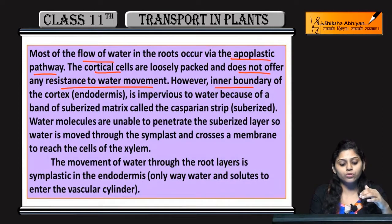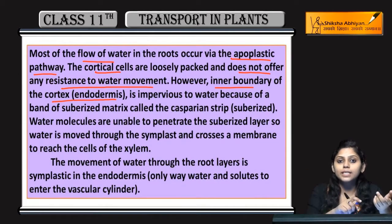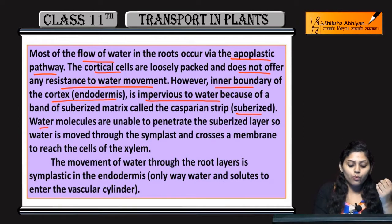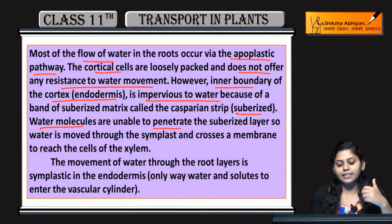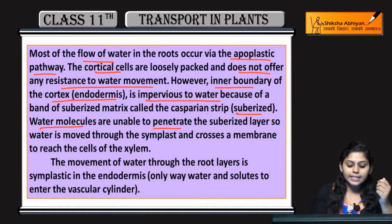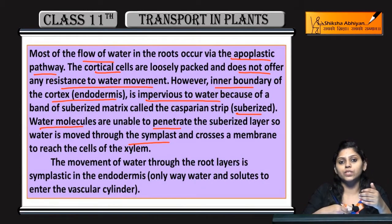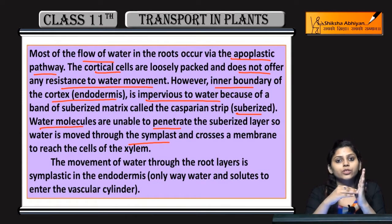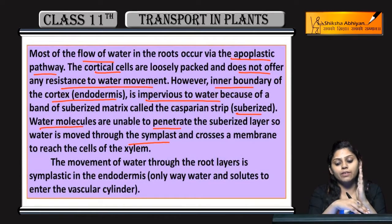Aur inner boundary jo hai cortex ki, jise endodermis bolte hain, jahan par casparian strips present hain jo suberin ki bani hui hain — they are impervious to water, kyunki jo composition hai uski suberin ki wajah se. Water molecules are unable to penetrate the suberized layer because woh impermeable hai water ke liye. Isliye water symplast mein move kar jata hai. Apoplast mein cell walls mein move karta hai, but jaise hi endodermis mein casparian strips aati hain, toh apoplast symplast ko travel karta hai.